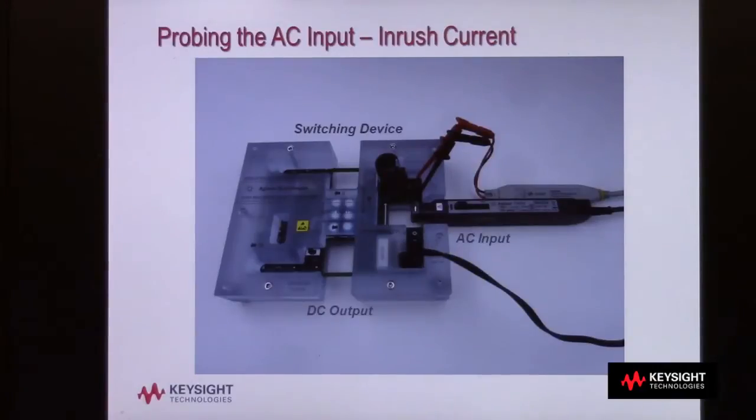The first task in making an inrush current measurement is to probe the AC input with voltage and current probes. You'll typically need a high-voltage differential probe and a clamp-on Hall Effect current probe.